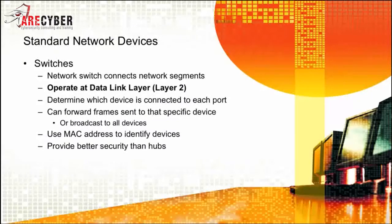We will start with the hub. It is the most basic of all network devices. It's a layer one device. It connects multiple Ethernet devices together to function as a single network segment. They don't read data; they simply pass it straight through. However, they're very rarely used today because of the inherent security vulnerabilities associated with hubs.